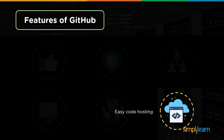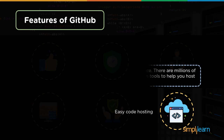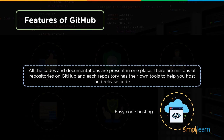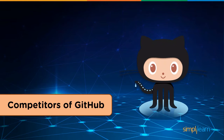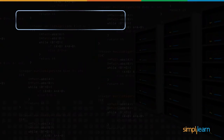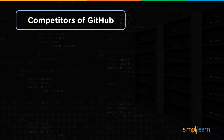The last feature is easy code hosting. As the name suggests, the code and documentation are hosted in one place. There are thousands of repositories on GitHub, and each repository has its own set of tools to release and host the code.